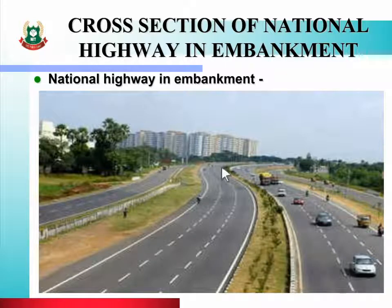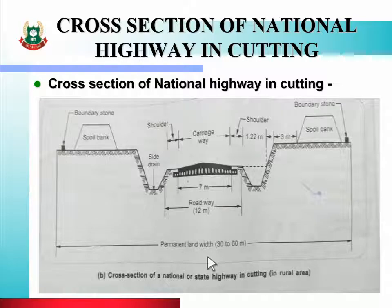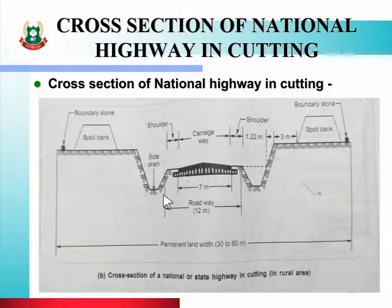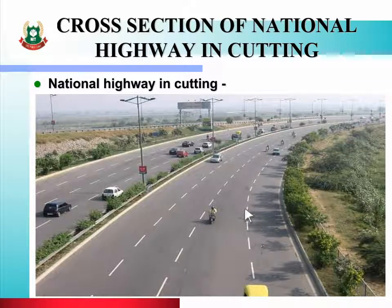Next you will see the figure of the cross section of national highway in cutting. Cutting means drawing the highway in a sloping downward direction. See this figure — in it you will see carriage way, shoulder, side drain, and boundary stones. In this way the cross section of national highway in cutting is drawn. This is the figure where you can see the national highway in cutting, showing the portion of road where cutting is provided.